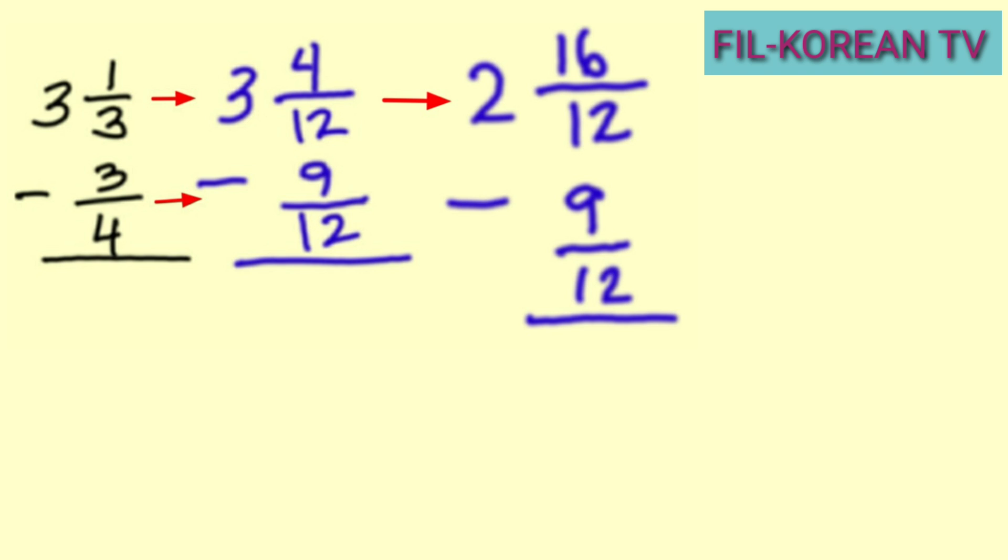16 minus 9 is 7. Then, write the whole number 2, and copy the LCD 12. The answer is 2 and 7 twelves. It is already in lowest term because the fraction 7 twelves is a proper fraction, and the numerator 7 and the denominator 12 do not have other common factor aside from 1.